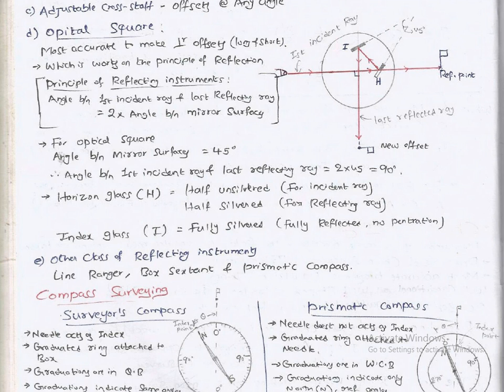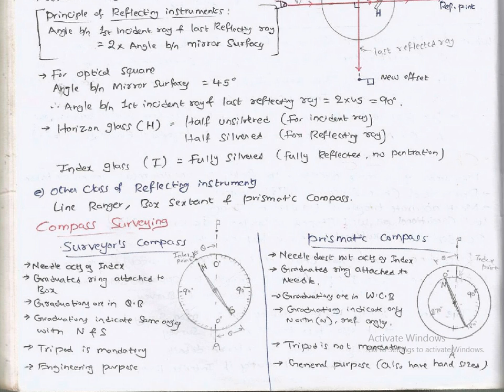Types of compass: surveyor's compass where needle acts as index, graduated ring attached to box, graduations are in quadrantal bearing, indicates same angle with north and south, tripod is mandatory, used for engineering purposes. Prismatic compass, general purpose compass, needle does not act as index, graduated ring attached to needle, graduations are in whole circle bearing, graduations indicate north reference angle, tripod is not mandatory, general purpose, also hand sized.